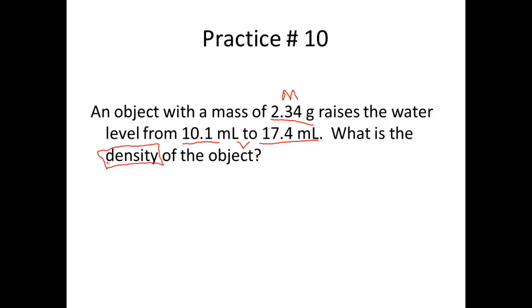So our first step, setting up our equation. Density is equal to mass divided by volume. Just correctly setting up what we're solving for gives you one point towards the problem. Now, as we're going, we know the mass, but we don't know the volume. To find volume, volume displacement, final volume of the object minus the initial volume of the object gives you that overall volume, in this case about 7.3 milliliters.